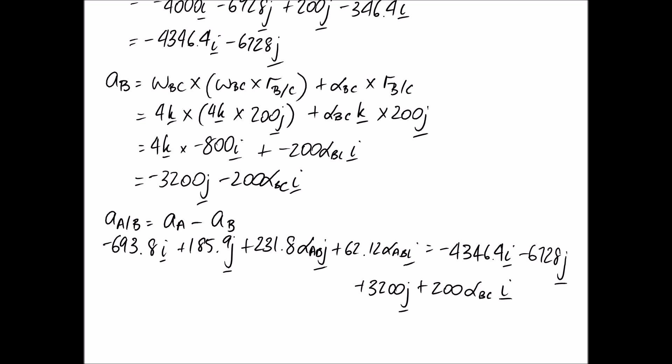Alright, so now it's just a matter of taking apart the I and J components in order to work out our two unknowns, which is alpha AB and alpha BC.